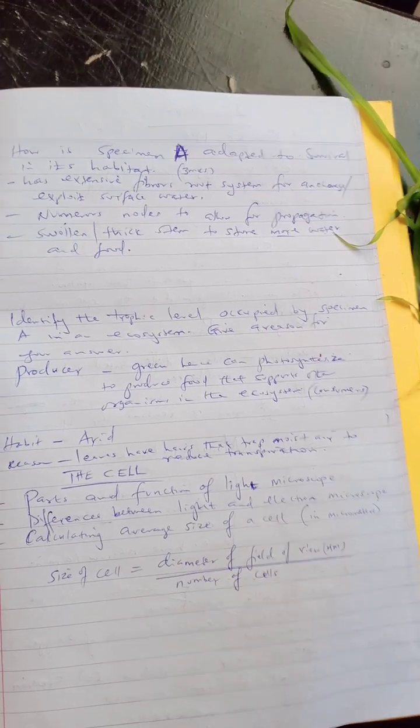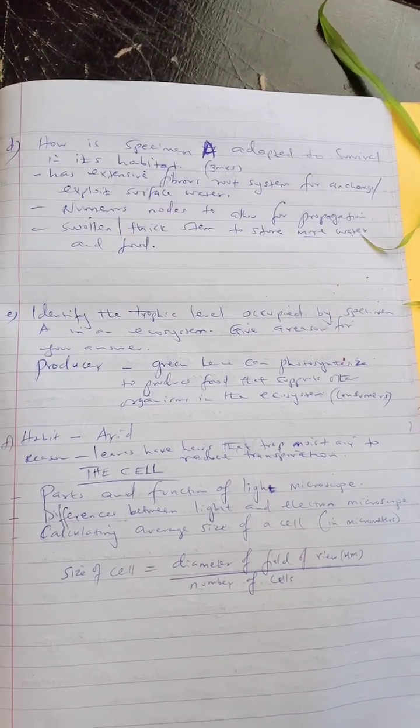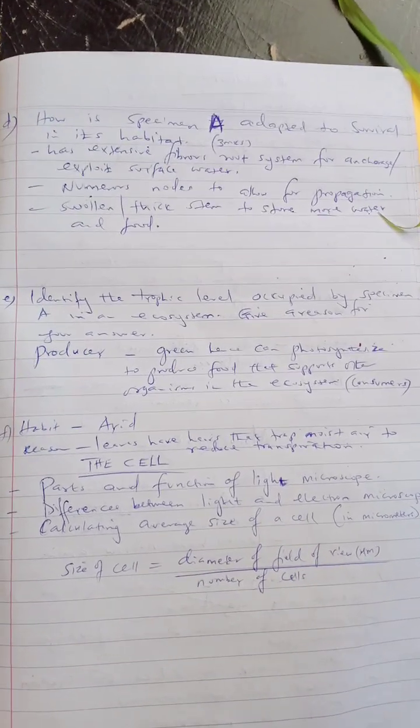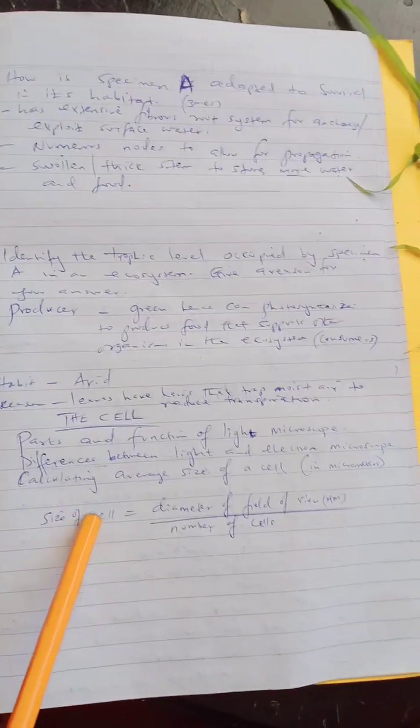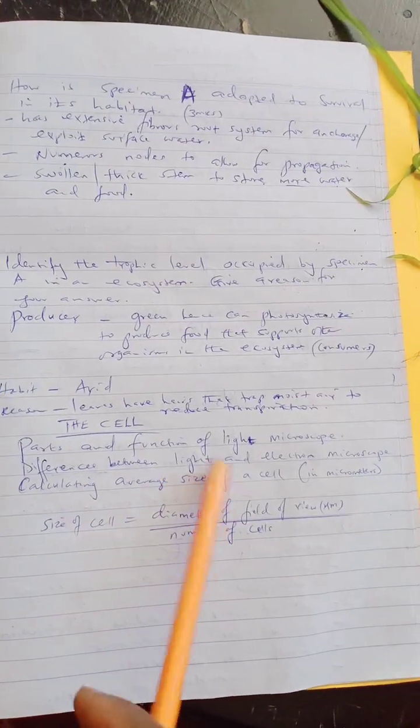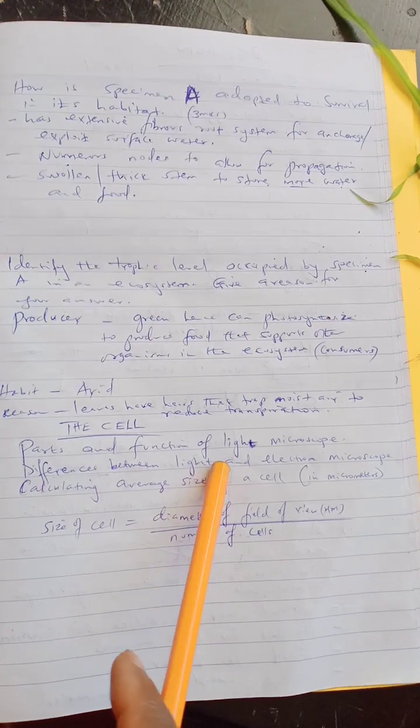Now under the cell topic, it is basically about the light microscope — its parts, dimensions, and lenses.